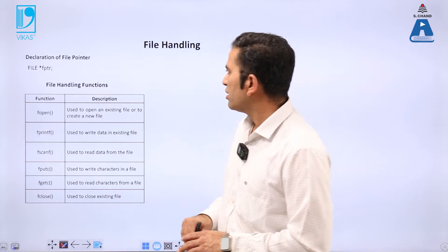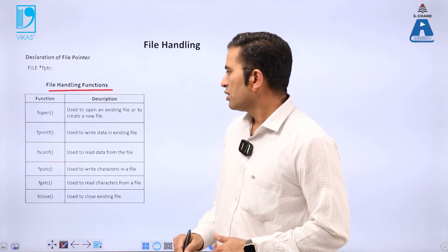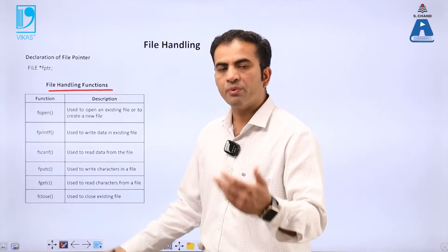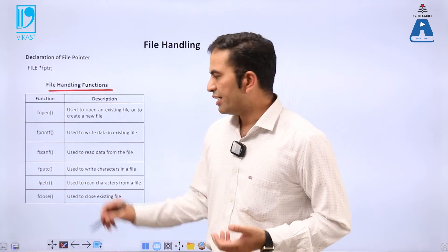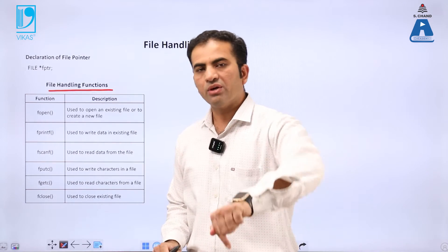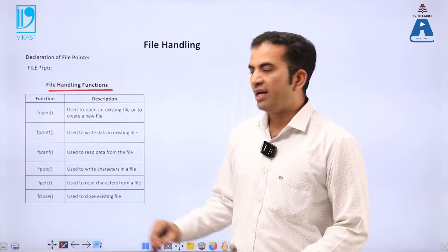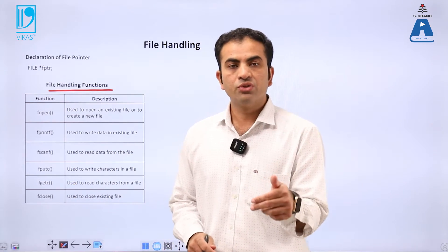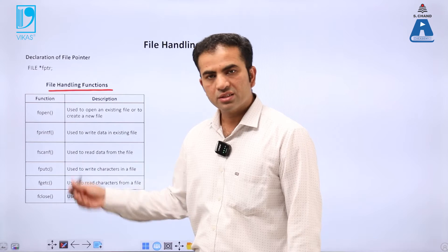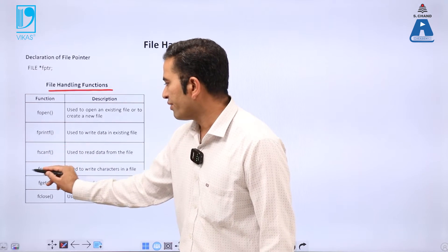For using file handling, we need the following functions. fopen is used to open an existing file — if the file is already available on the hard disk, fopen will open it. fprintf is used to write data into an existing file — if you want to print data into the file rather than on the monitor, we use fprintf. fscanf is used to read data from the file — earlier scanf was used to read data from the keyboard, but to read from a file we use fscanf. fputc is used to write a character into a file.